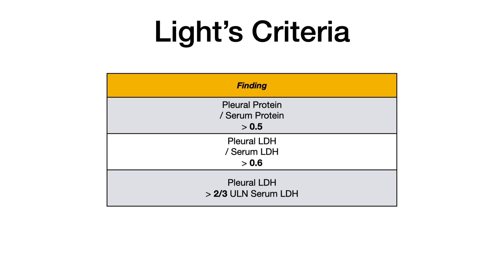The same is true of the second and third criteria — they would be positive in states where LDH is higher in the pleura than in the serum. LDH is an enzyme that leaks out of cells when cells break. Cells break open in states of inflammation, cancer, tuberculosis, and pulmonary emboli. When cells are breaking open and releasing LDH, we have an increase of LDH in the pleura more than in the serum. When that happens, the ratio will be greater than 0.6 or greater than two thirds the upper limit of normal of the serum LDH.